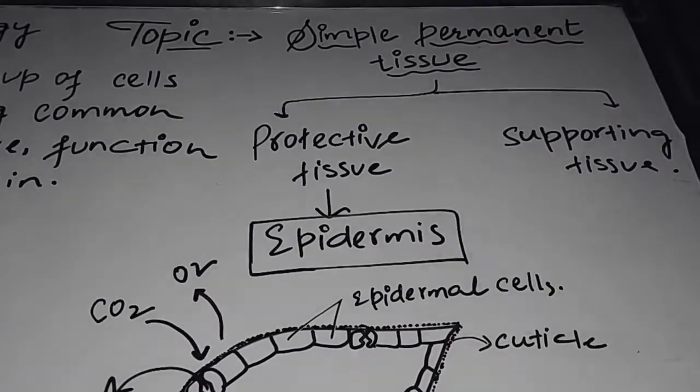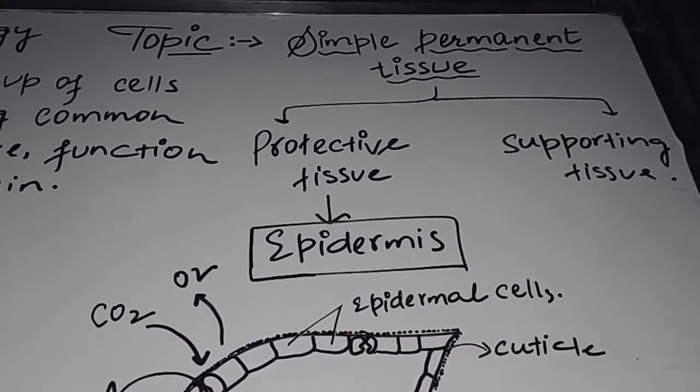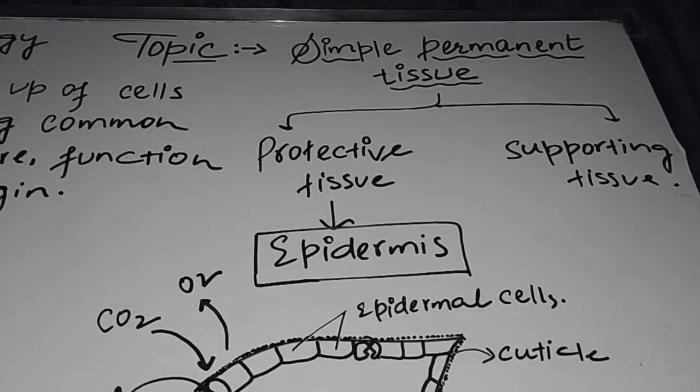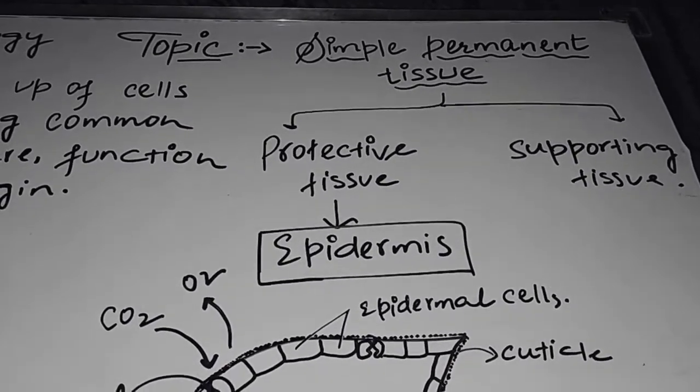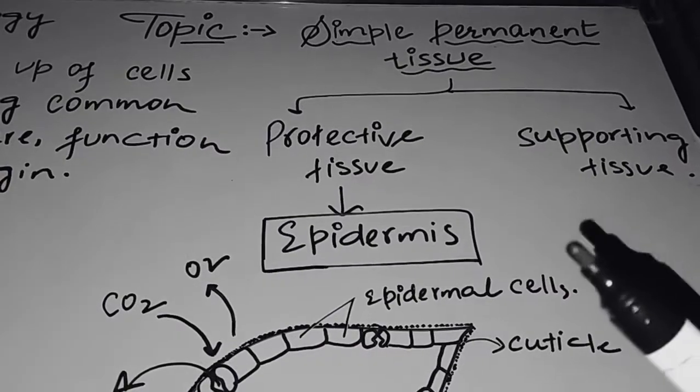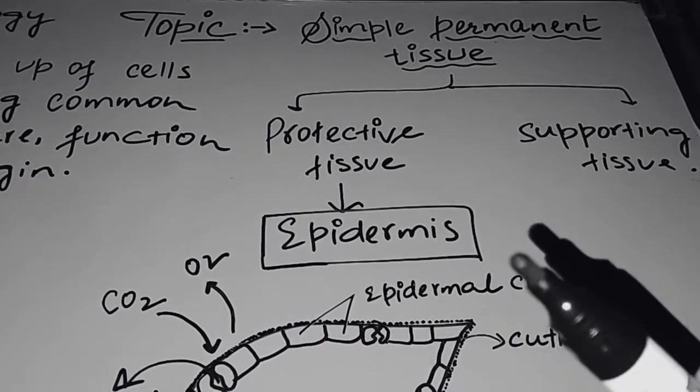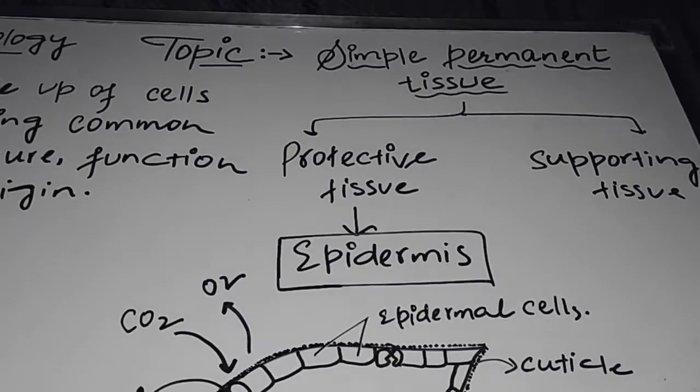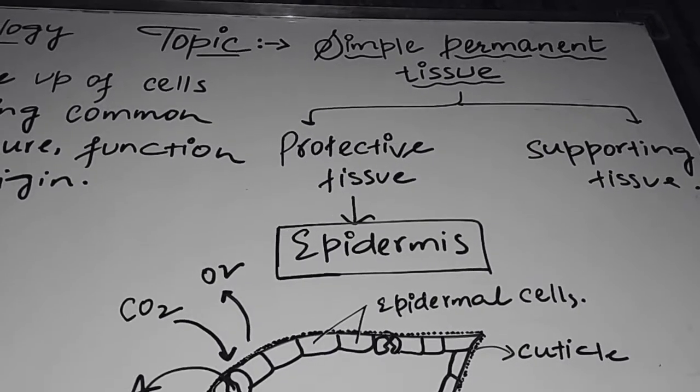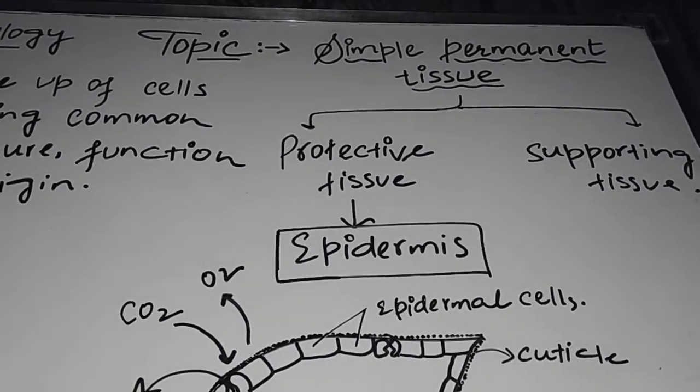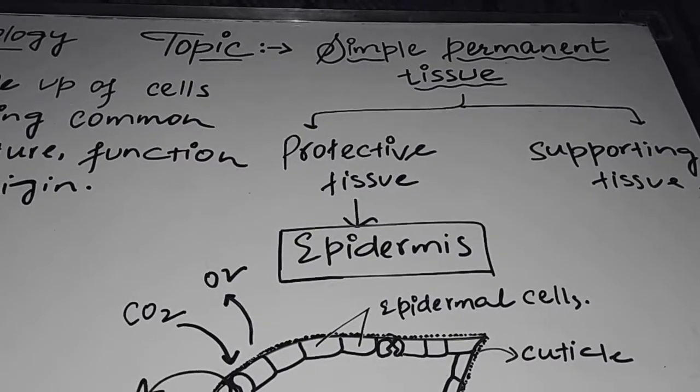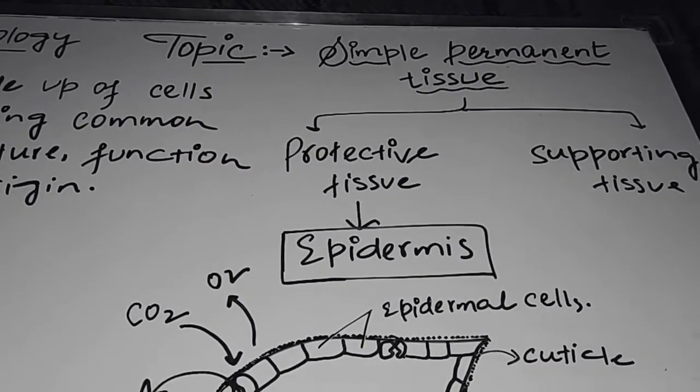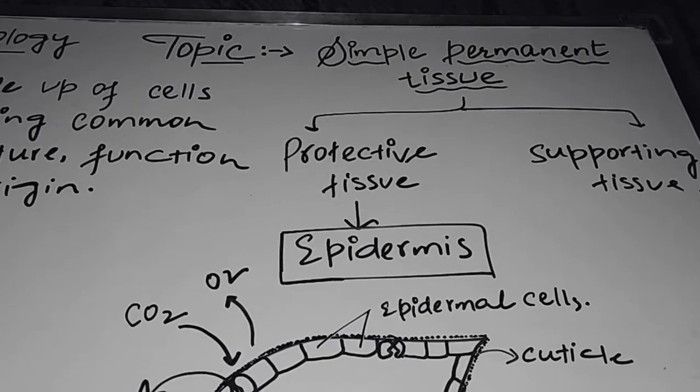Simple permanent tissues are classified into two types depending upon their functions: protective tissue and supporting tissue. Protective tissue, as the name suggests, protects plant body from different agents like mechanical injury, chemicals, infectious agents, etc. Protective tissue may be epidermis. It covers the whole plant body. Like in case of animals, if we talk of our body, our whole body is covered by skin, that's the major or largest organ of our body.